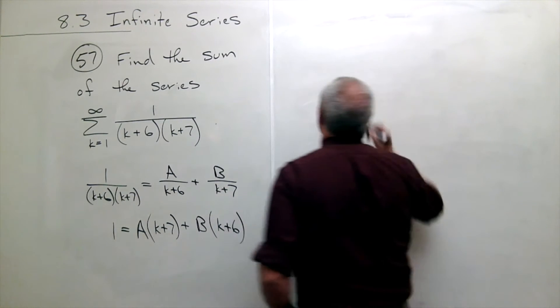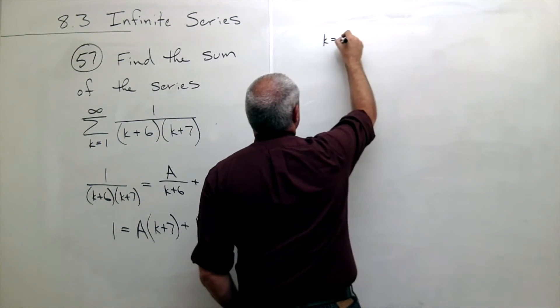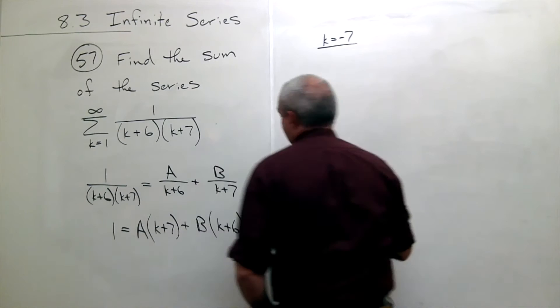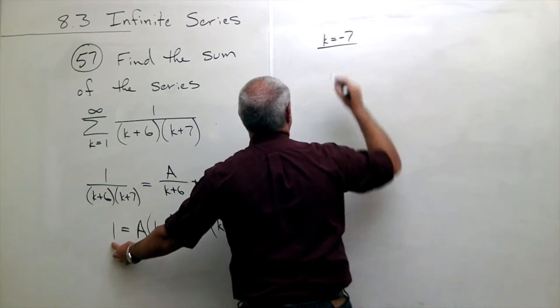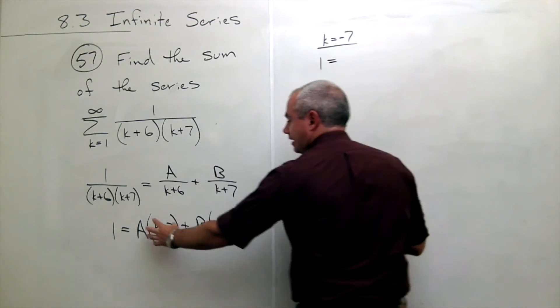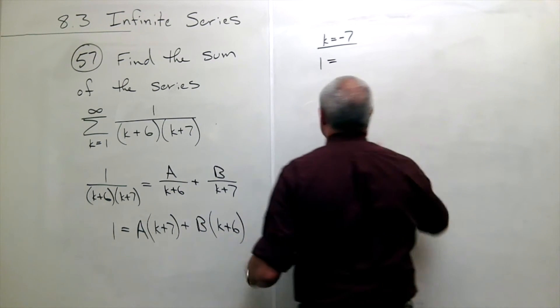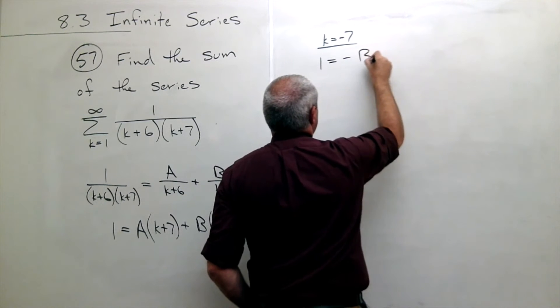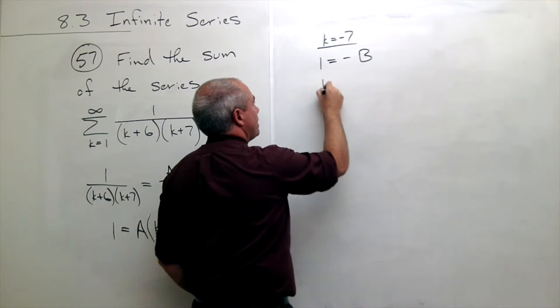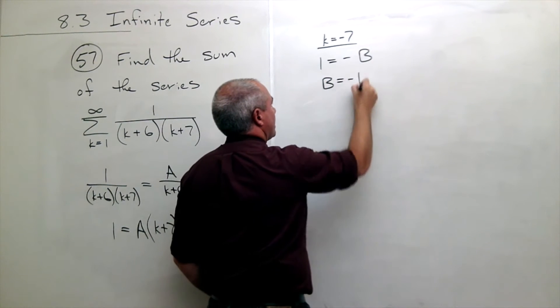So let's let k be equal to negative 7. If k is negative 7 then I have on the left side I have a 1 and on this side this term goes away and negative 7 plus 6 is negative B. And so I get that B must be equal to negative 1.